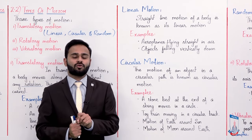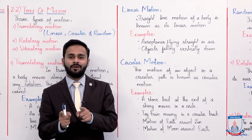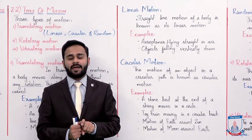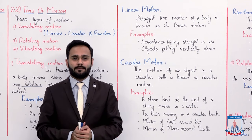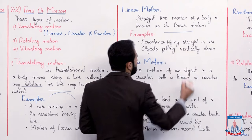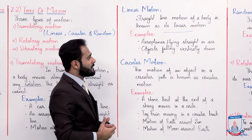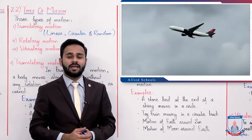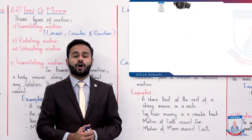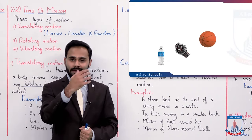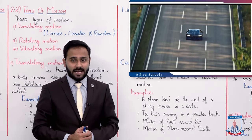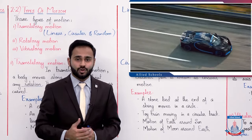Mein aap se kaha tha ki translational motion kaun sa hai jismein ek body line mein move karti hai — woh line straight bhi ho sakti hai ya curve bhi ho sakti hai. Ab us mein woh objects jo bilkul straight line mein move karti hain, unhein phir hum kehte hain linear motion hai inka. Like for example, aeroplanes flying straight in air — inhein hum kahenge yeh linear motion hai. Objects falling vertically down — inka bhi linear motion hota hai, yeh bhi straight line mein niche aate hain. Aur similarly, a car moving in a straight line — iska bhi linear motion hoga.